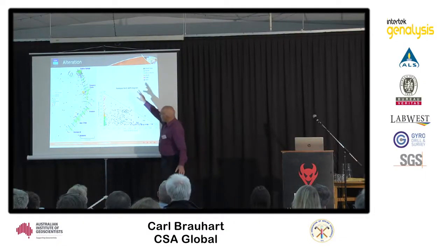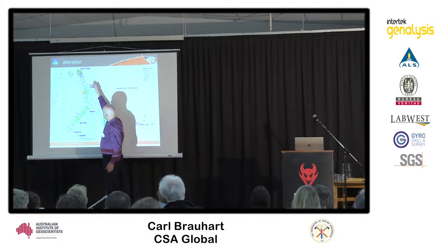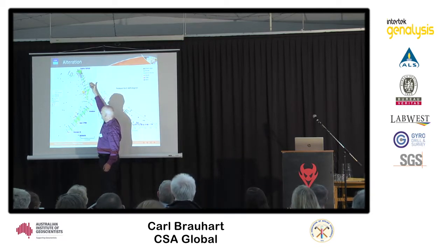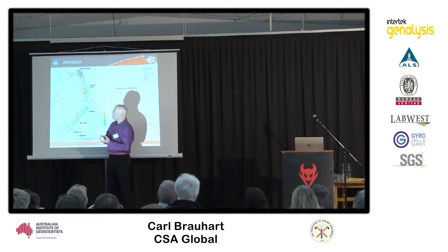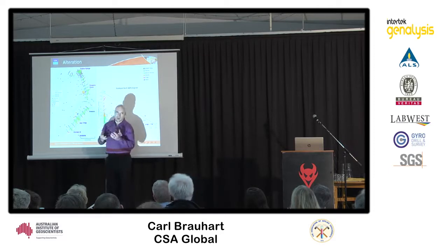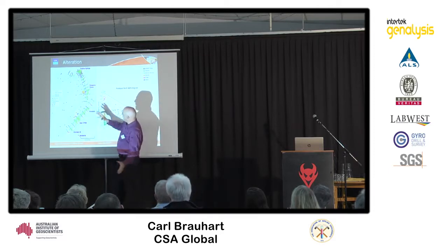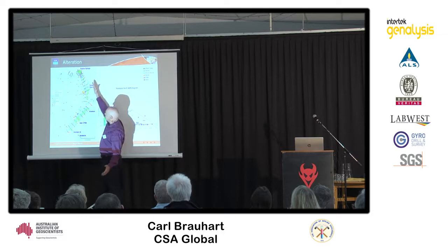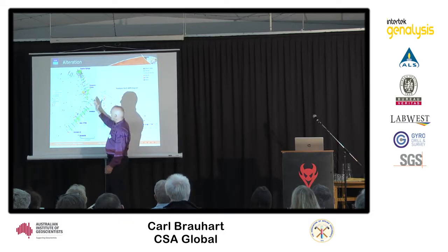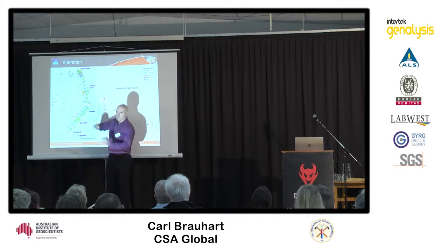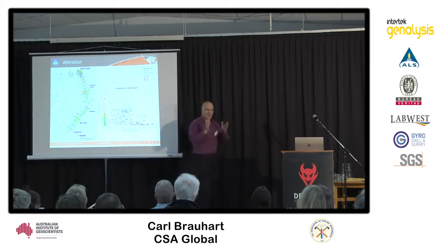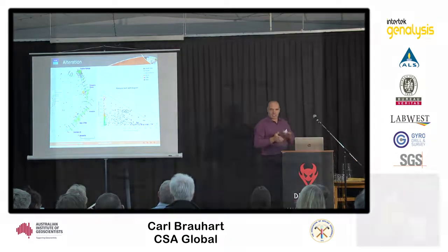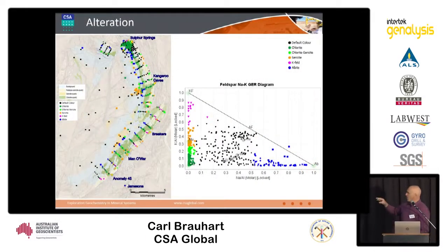You get semi-conformable alteration, feldspar bearing dominated by potassium feldspar, grading down to albite. Where we've got green, we've got feldspar destruction. Where we've got orange, we've got sericite alteration. The key is that where the zones of alteration are parallel to the volcanic stratigraphy, we've got recharge. But these corridors of chlorite alteration cutting across are interpreted as discharge zones. It's not a bad interpretation because that's where we're finding our massive sulphide mineralisation.